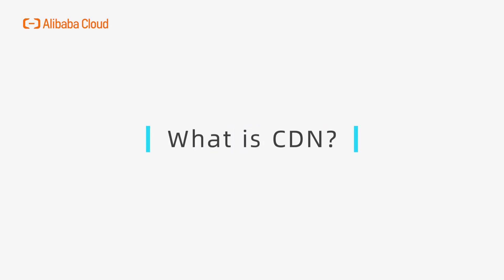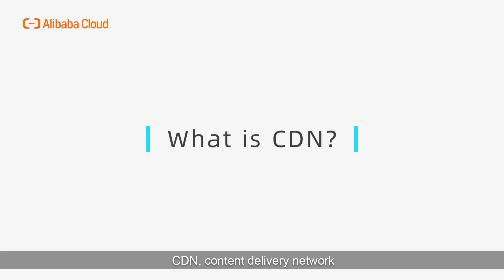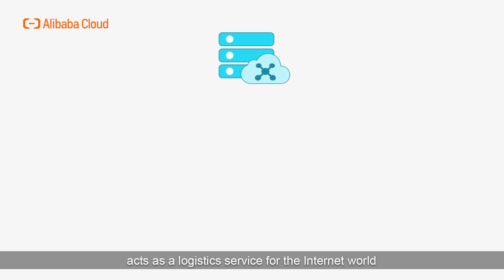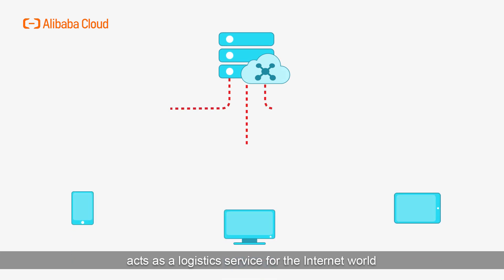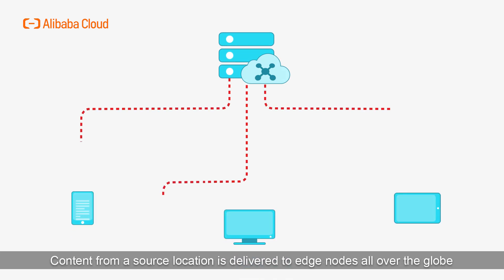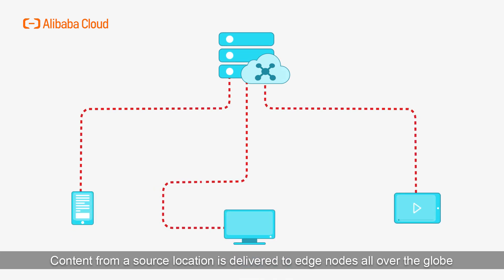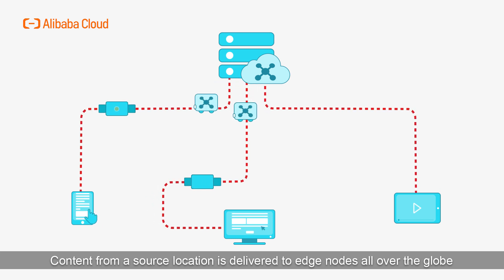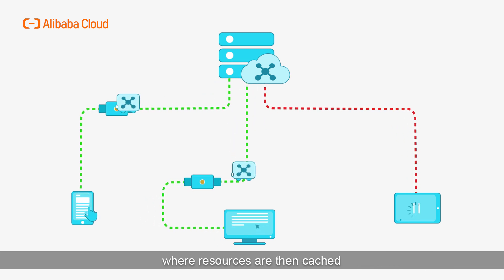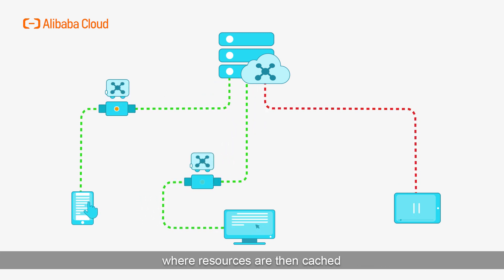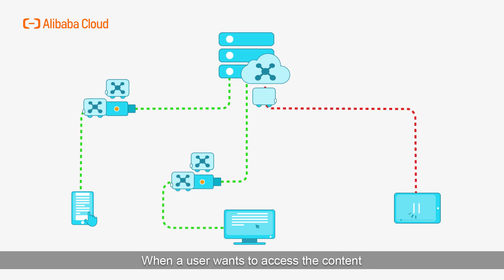What is CDN? CDN, Content Delivery Network, acts as a logistics service for the internet world. Content from a source location is delivered to edge nodes all over the globe, where resources are then cached.